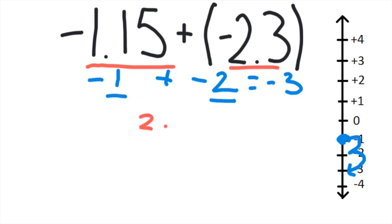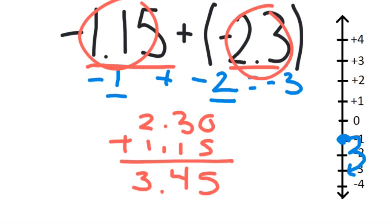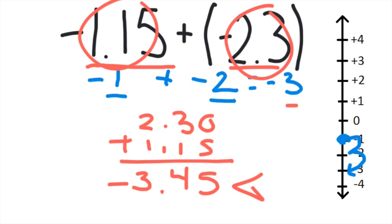So we want to do the same thing to the original problem — add the absolute values and then make the answer negative. We've got 2.3 plus 1.15, and then we make our answer negative because we're putting together negatives. So the answer is negative three and 45 hundredths, which is very close to our estimate, making our answer seem extremely reasonable.